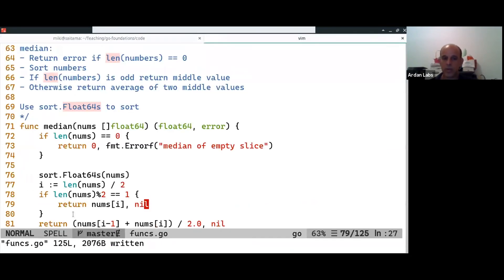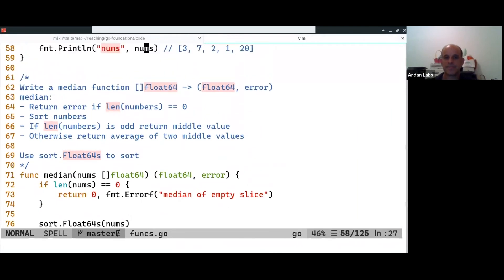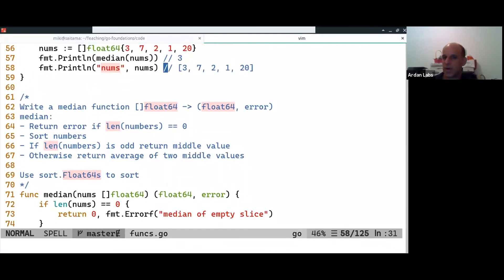Right? I want to see the three, seven, two, one, 20. And this is something known as the principle of least surprise, right? So a function when it does something, it should do it in the least surprising way.